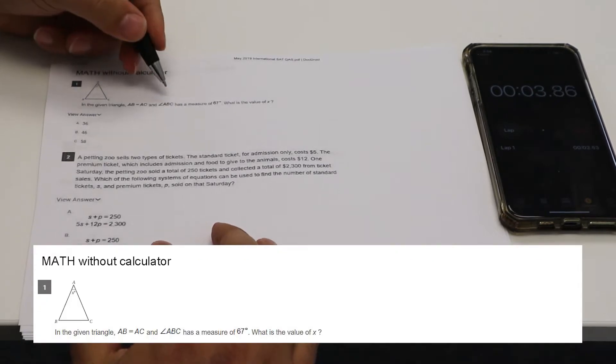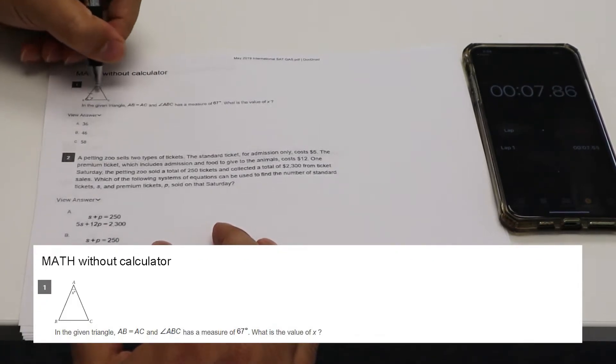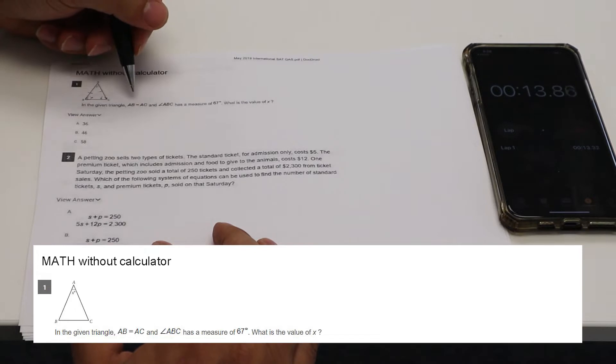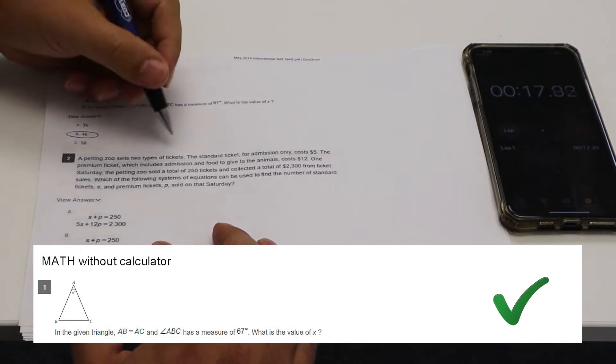All right, so angle ABC is 67. Those are equal. This is 67. So the other angle would be, let's see, that'd be 134. So 46.